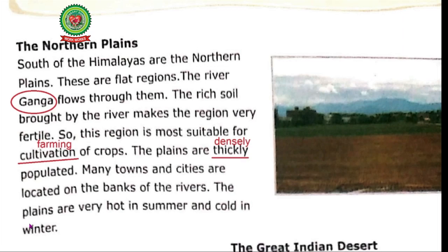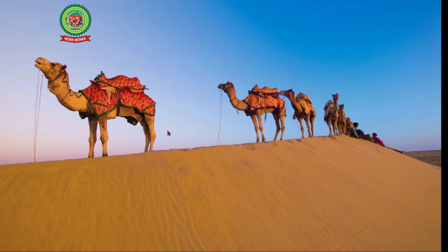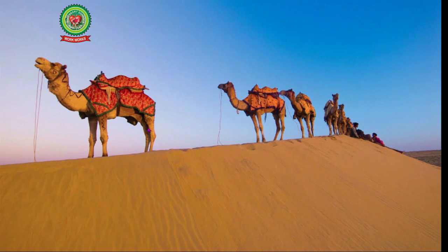Now come to the next topic — the Great Indian Desert. What is the landform you see in this picture? It is a Desert. In which state of India do we have a desert? We have the Great Indian Desert in Rajasthan. This area is covered with sand and the rainfall is also very little here. Which animal do you see in this picture? We see a Camel. Why are camels used in the desert? Camels are used in the desert as they have padded feet which help them to walk on sand easily.